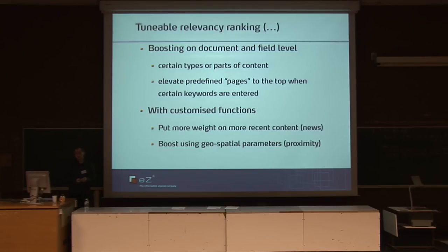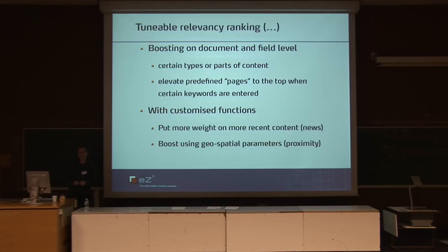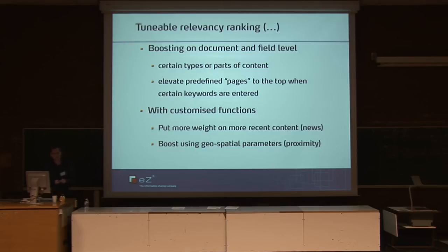You can also tune the relevancy ranking in more interesting ways using customized functions. That allows you to put more weight on, for example, more recent content like news. If you have a large news site with articles over many years, you may still want to push the most recent articles up. Other uses are boosting on geospatial parameters, like proximity searches — if you want to find a restaurant which provides lobster nearby, you can search for it and limit results to what's not too far away from you, if your application is designed for that.